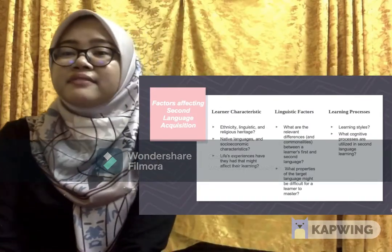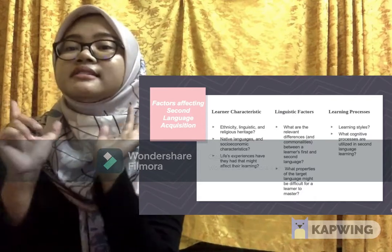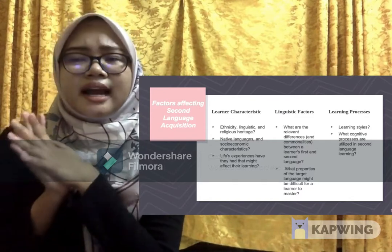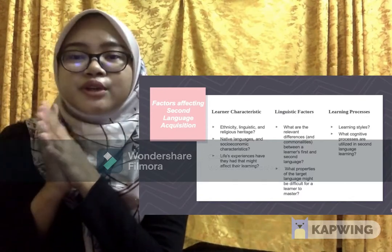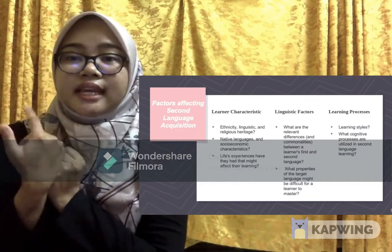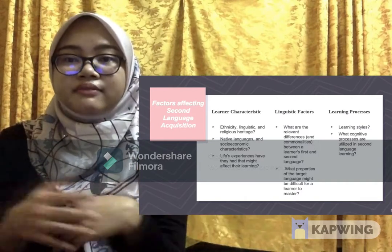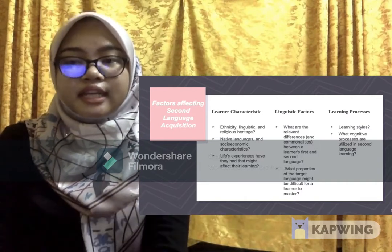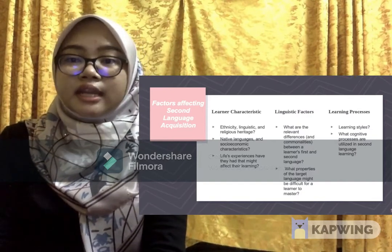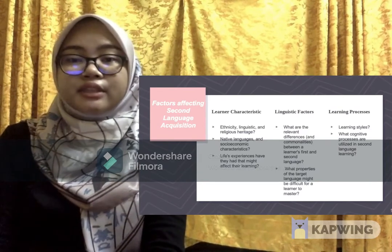What are the factors that influence second language acquisition? There are seven of them. The first one is learners' characteristics. As a teacher, you need to know your students well. You need to know their cultural, ethnicity and their religious background, because all these three factors will affect their attitude on learning a second language. For example, a minority group learning the language of a majority group may have a different attitude or motivation while learning the language.